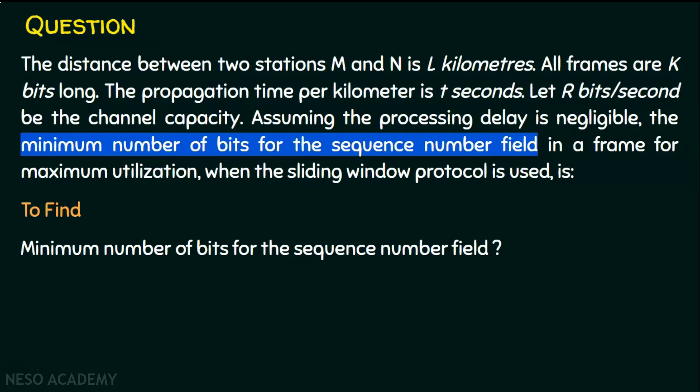We have sufficient data with us. Let's now find out the minimum number of bits for the sequence number field. We know the propagation time is given as t seconds, that is the propagation delay. For L kilometer distance, it will be Lt seconds.